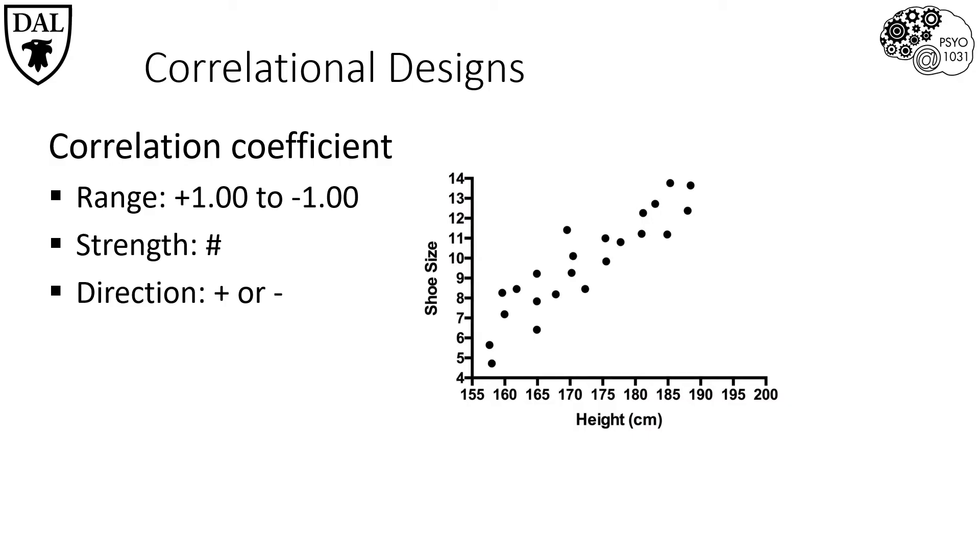This figure shows a type of graph called a scatterplot. Each data point on the graph represents two variables for a single person. On the horizontal axis called the X axis we have height, and on the vertical axis also called the Y axis we have shoe size.